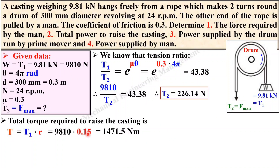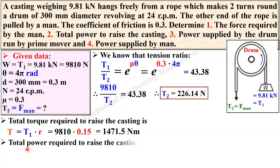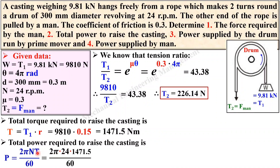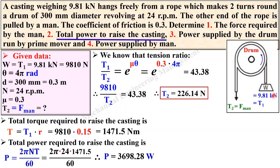Keep in mind the radius is in meters, so the unit is Newton·meter. Now with the torque known, we can find the power using P = (2πNT) / 60. Substituting N = 24 rpm and T = 1471.5 N·m, and simplifying, we get the total power to raise the casting. Power must be in watts. This is the second answer.